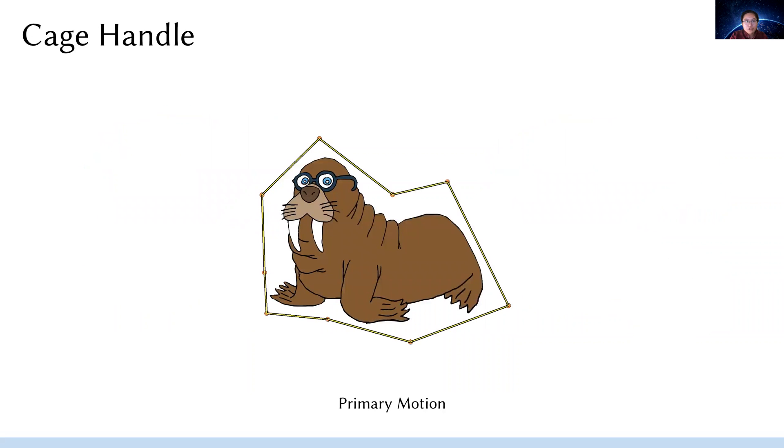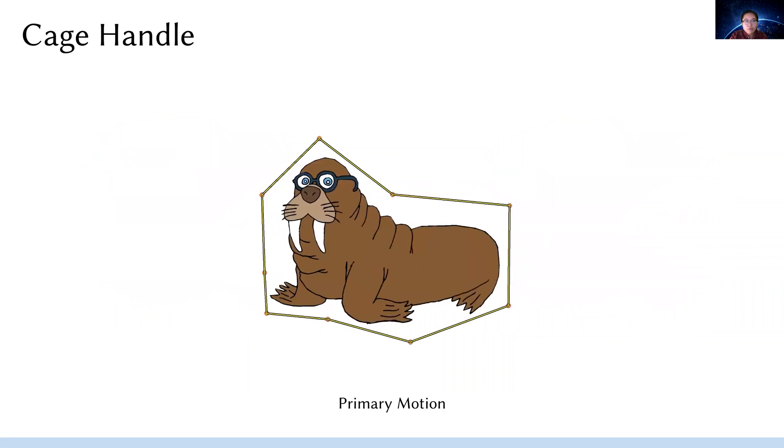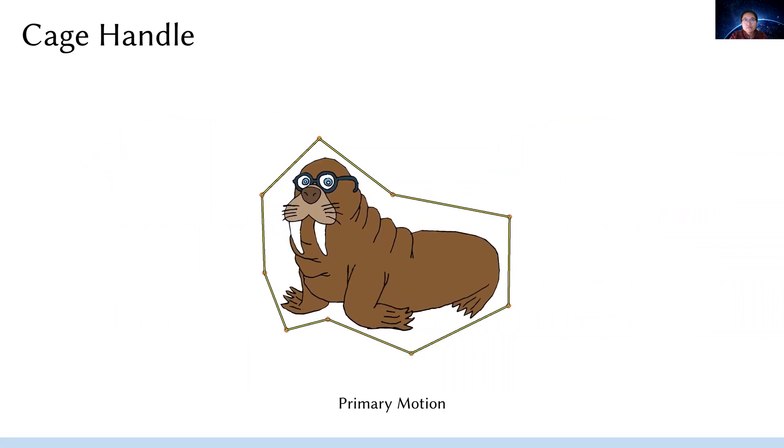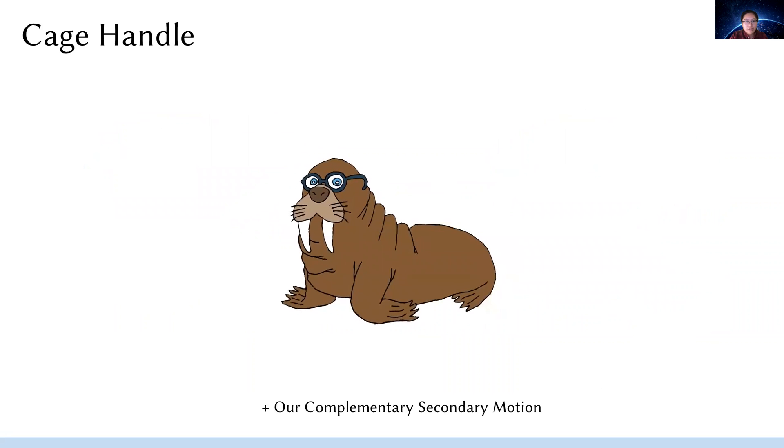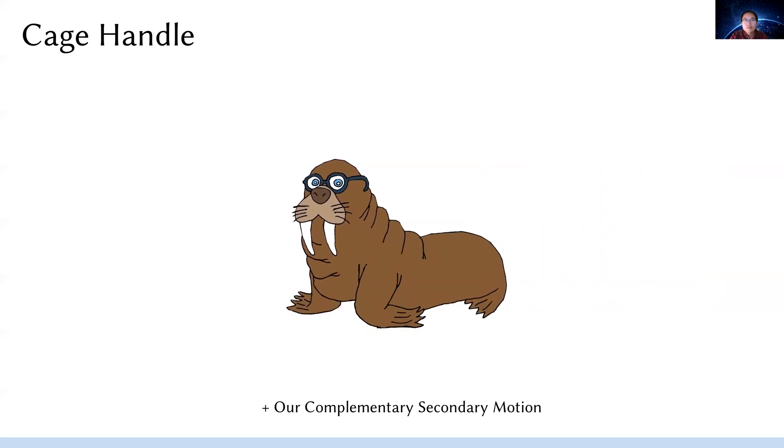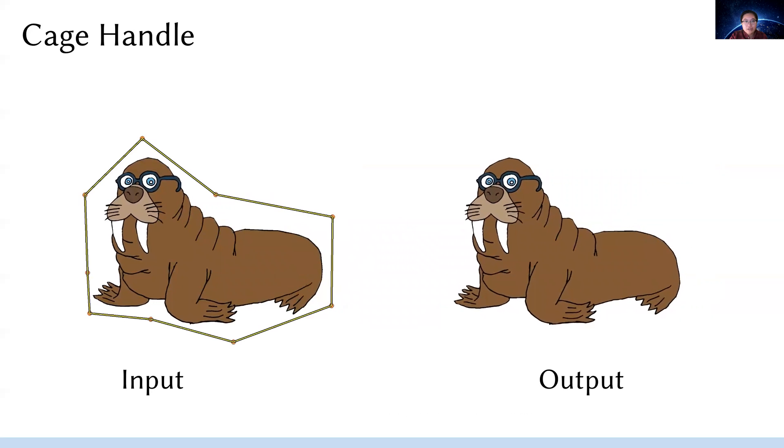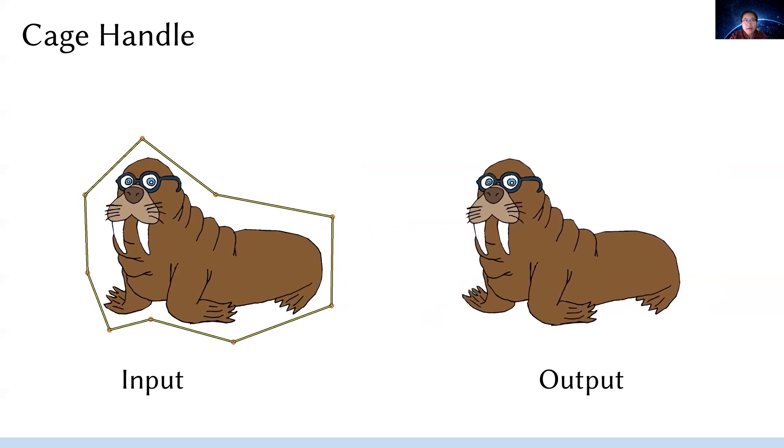And here we show a cage-based deformer rigged with harmonic coordinates applied to a walrus. And here is the enriched result after applying our method. Look at the rich details of the dynamics on the body.